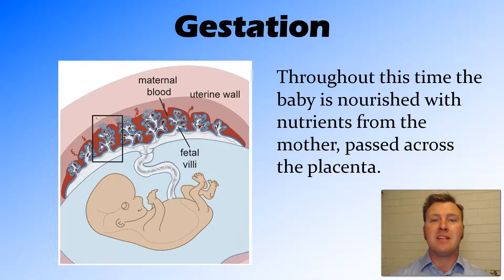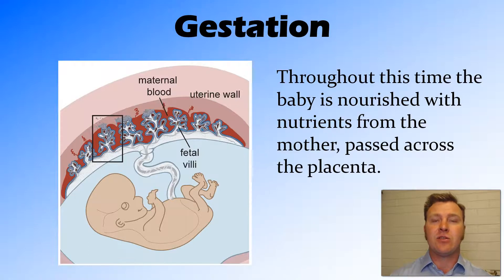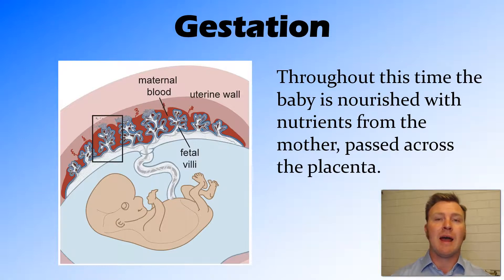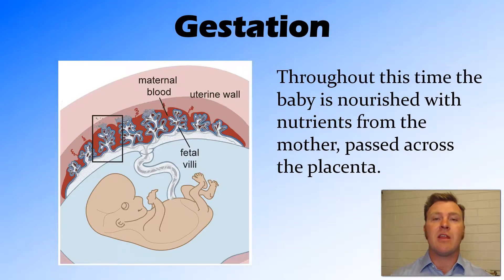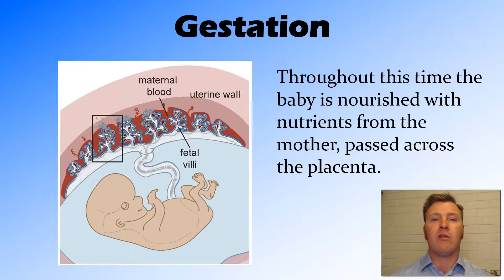During this time, the fetus needs nutrients, and the way it gets them is through an organ called the placenta. The placenta sits on the inside of the uterine wall and is connected to the fetus through the umbilical cord. What happens inside the placenta is that the blood systems of the mother and of the fetus come very close to each other — close enough to allow nutrients to travel through the cells, but not actually mix. So the circulatory systems are separate, but nutrients can pass across. This is how placental mammals, including humans, can sustain a longer period of gestation, allowing for further internal development of the fetus.